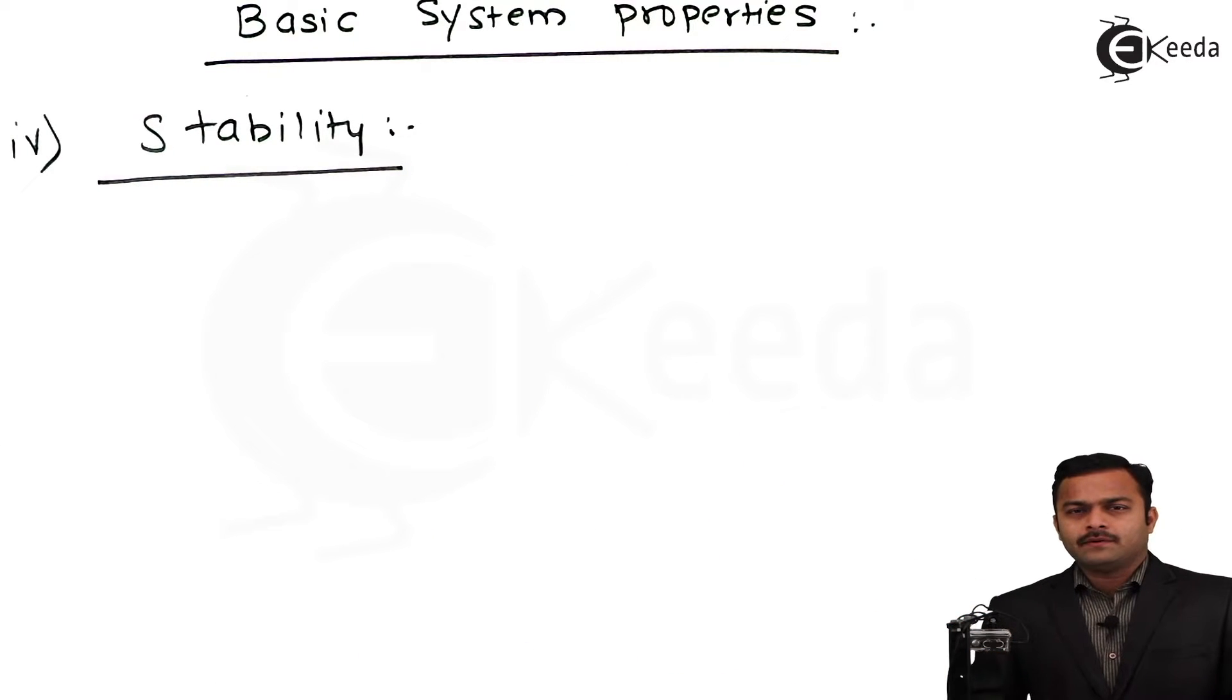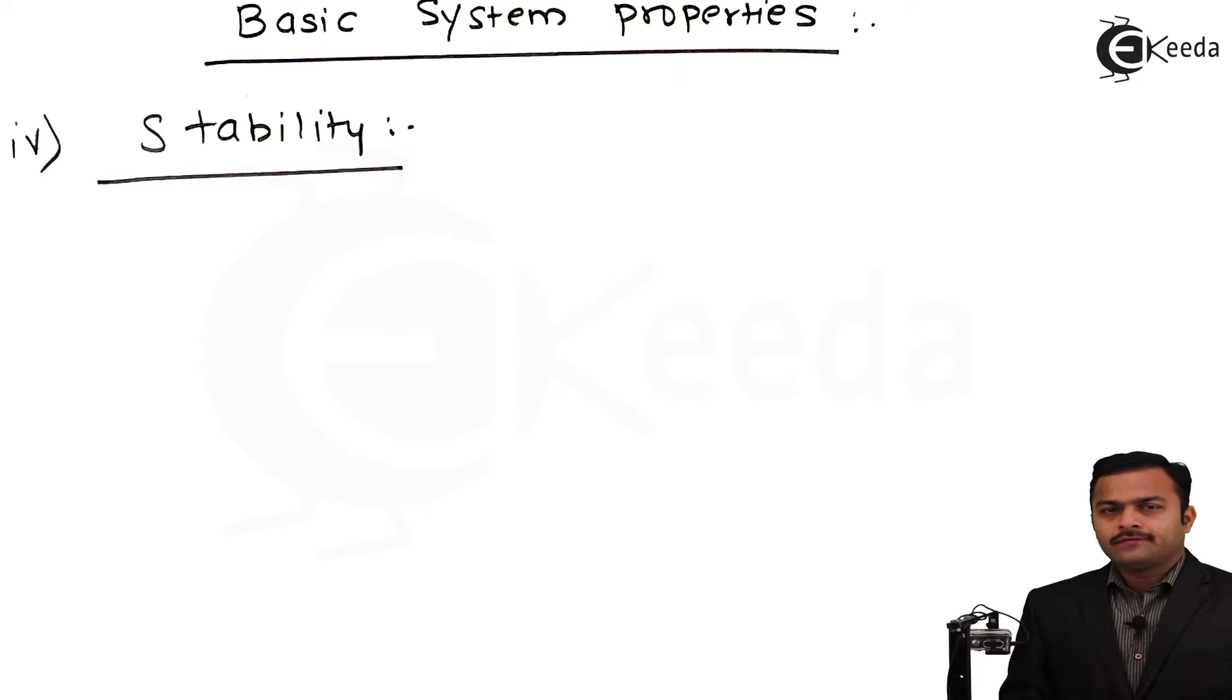As we know, stable means it should not deviate or it should not increase in terms of magnitude. So what we can say for a stable system: for any bounded input, we should get a bounded output.